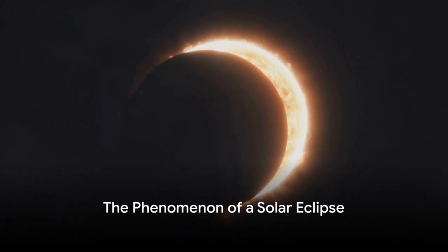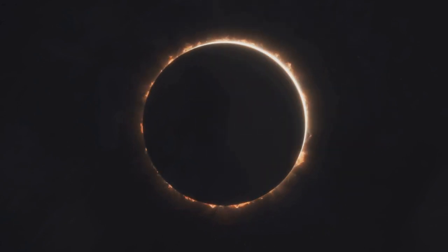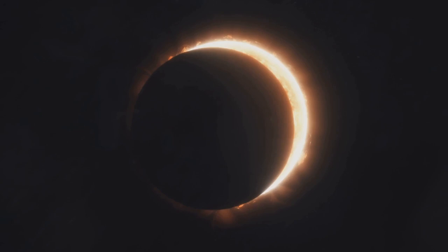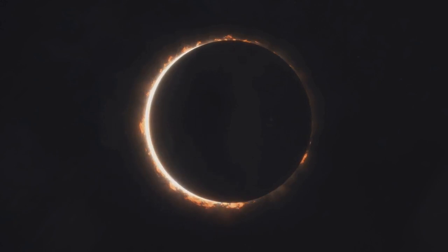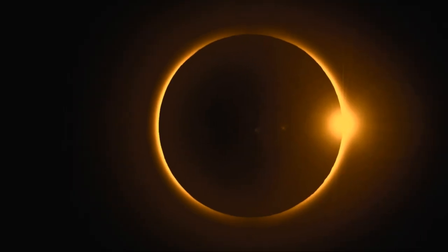Have you ever wondered what happens to the weather during a solar eclipse? It's a fascinating phenomenon that involves more than just the moon blocking out the sun. A solar eclipse, such as the one due on April 8, 2024, is a celestial ballet where our moon steps in between us and the sun, casting a shadow on Earth. This spectacle of nature doesn't only offer us a breathtaking view, but also brings along some curious changes in our weather.